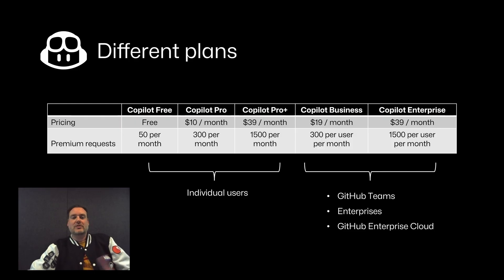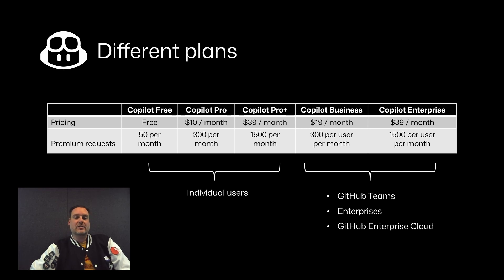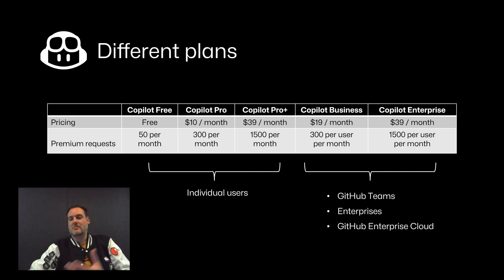These come with different pricing models. Copilot Free is already in the name — it's free. For Pro and Pro Plus, you start paying by the month per user. Copilot Business broadly matches what Copilot Pro can do, and Copilot Enterprise mostly matches what Copilot Pro Plus can do.